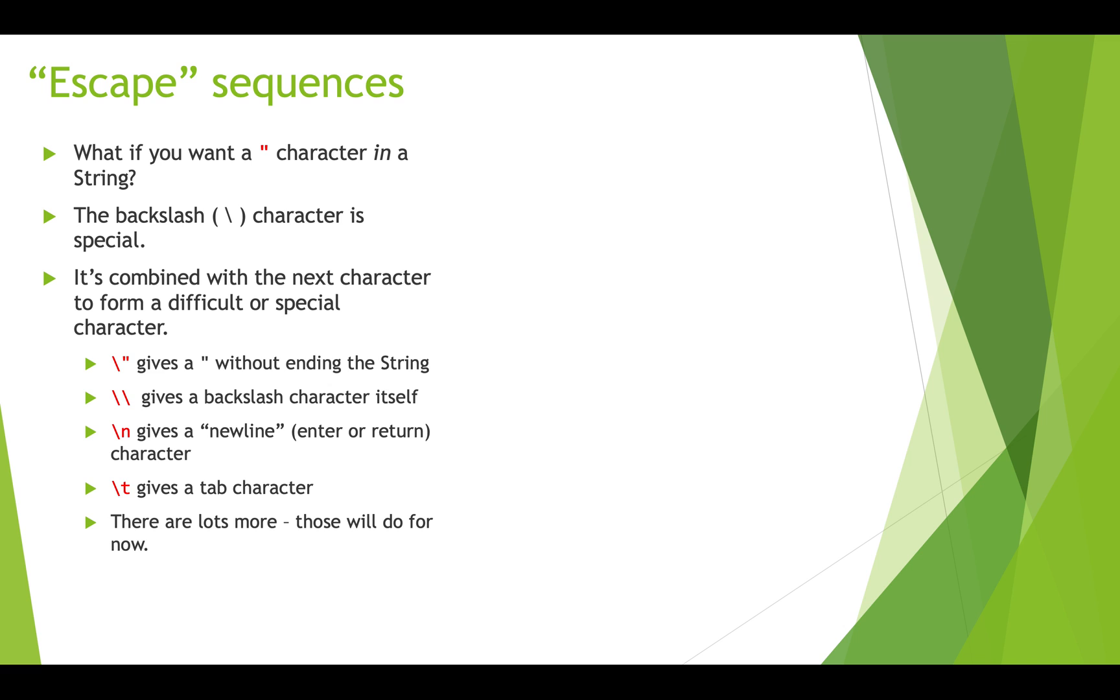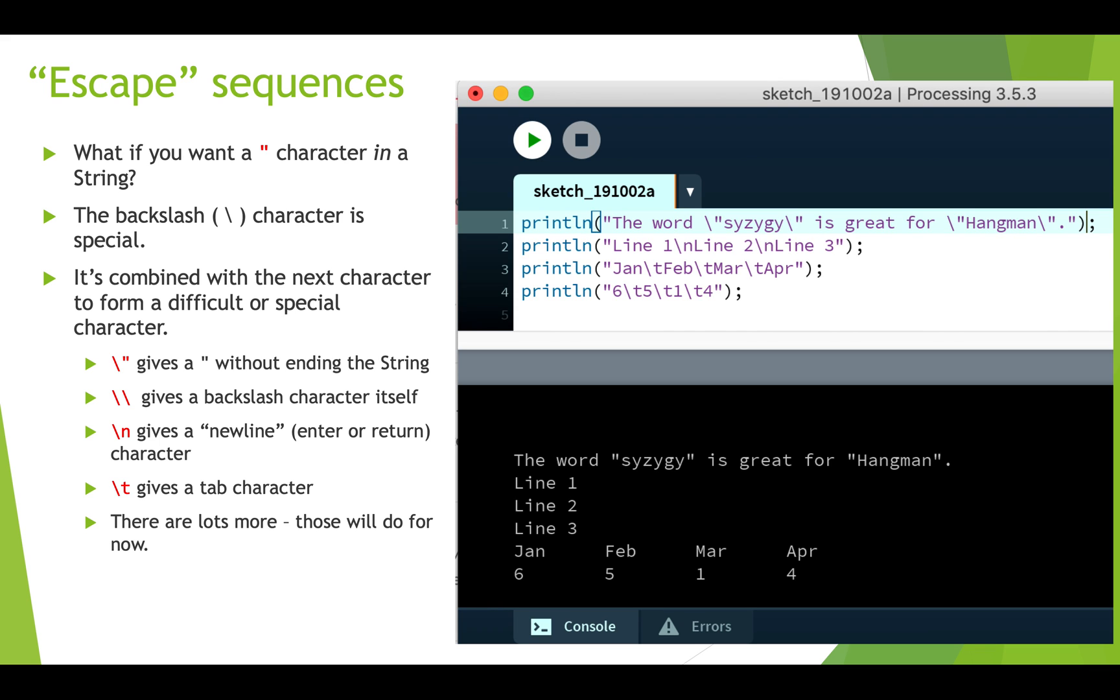So make the string break out when you print it or display it onto the next line. Similarly, slash t gives you a tab character. And there's a whole bunch of more escape sequences. But let's have a look at what these look like. So here in the first example, line one, we've got a print line and we've got quotations inside of this string. So this string says the word is great for hangman and is in quotations and so is hangman. And so you can see that in the output that our string actually contains quotations.